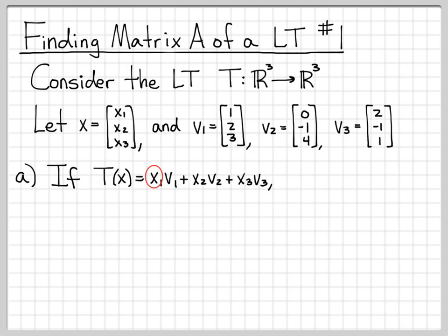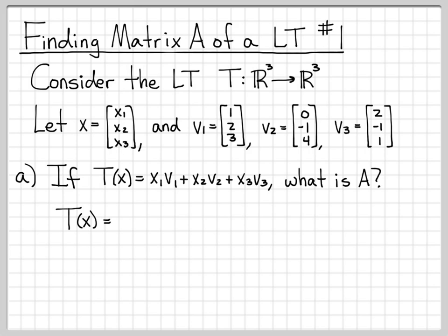So T(x) = x1·v1 + x2·v2 + x3·v3, where each xi is a scalar multiplying the corresponding vector vi. Given this definition of the linear transformation, the question is: how do we represent it as a matrix operation on x? We'd like to write T(x) = A·x for some matrix A.